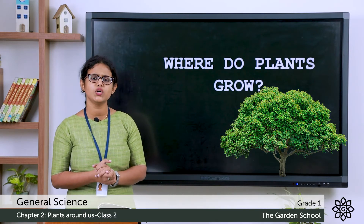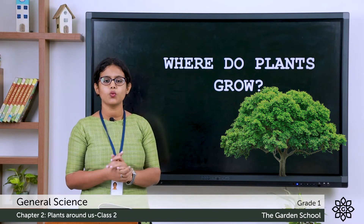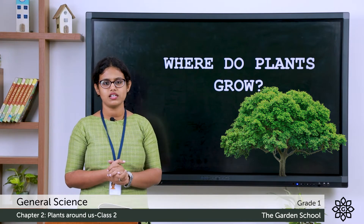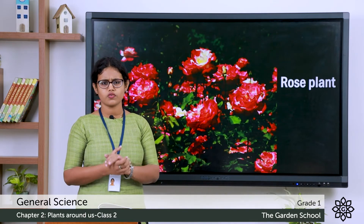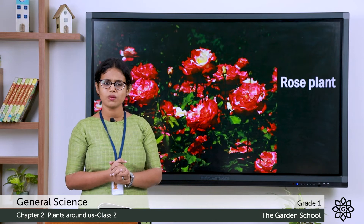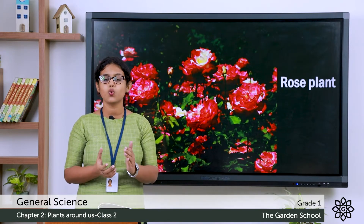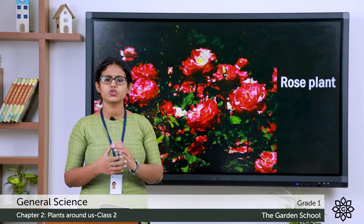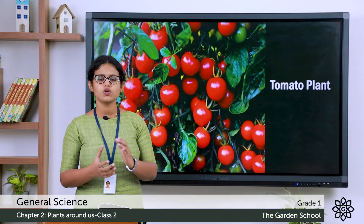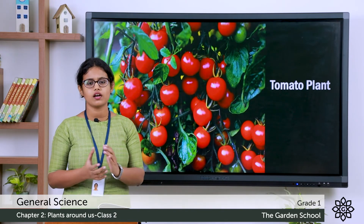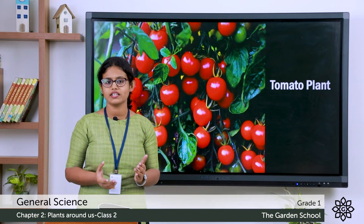Do you have a garden in your home? If you do, you can see there are some plants which grow in gardens, like the rose plant. Rose plant is a small plant. So rose plant grows in a garden. Another plant which grows in a garden is the tomato. There are many other plants which grow in gardens.